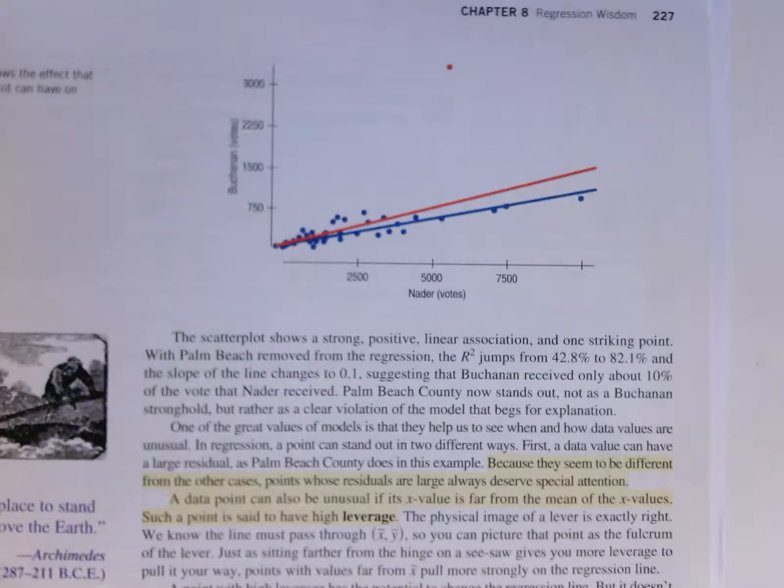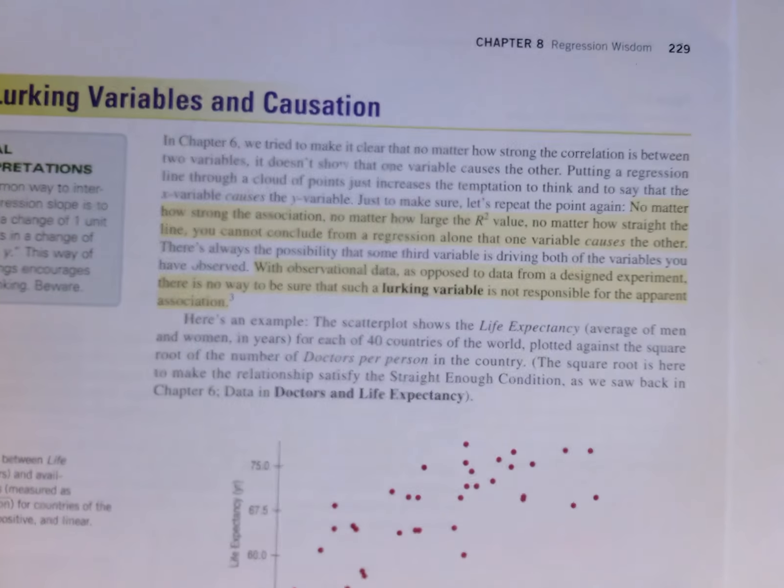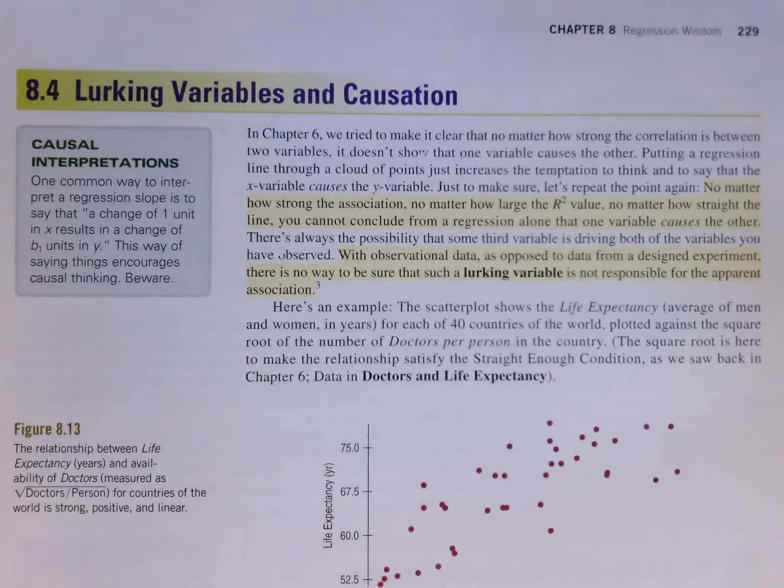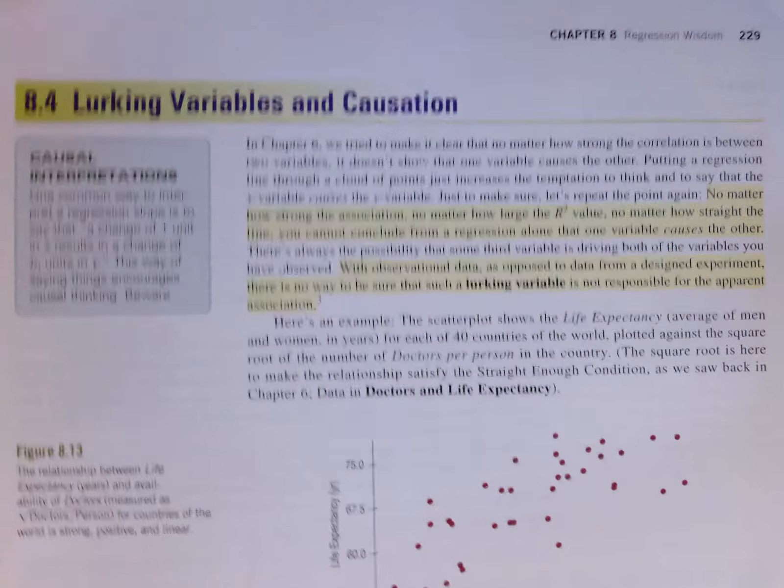Aspects where there can be both high leverage or influential points, and the differences between those. Different ways of seeing what the impact is of extreme values. And then the idea of lurking variables or confounding variables. That is a slightly different definition of confounding variables than the authors, and we'll talk some more about that. But the idea of thinking about a third variable that could actually be the cause of a relationship between these.